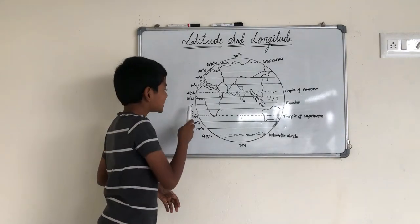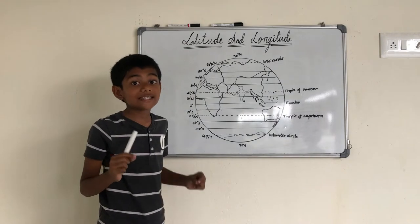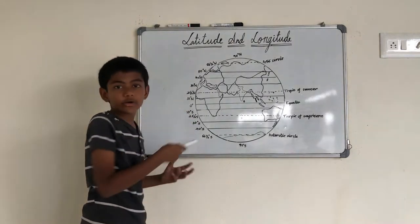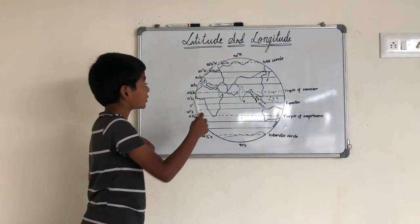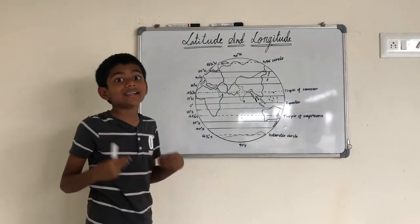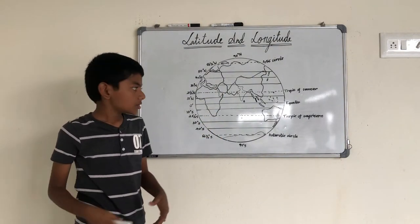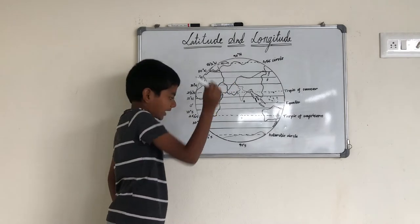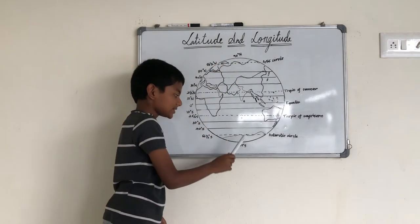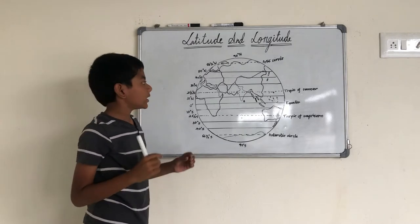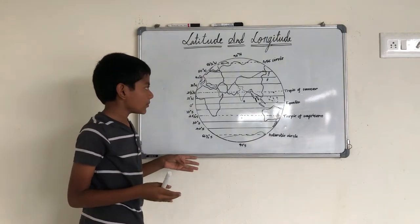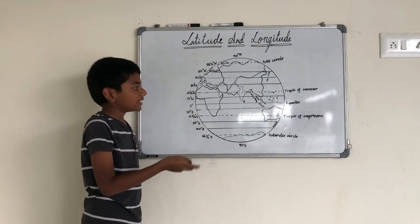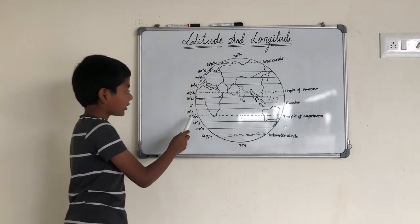The equator is marked as zero degrees because it is in the exact center of the earth, so it has no north or south value. But as you go further above or below, the degree increases. 90 degrees north and 90 degrees south are the North Pole and South Pole. The Tropic of Cancer is 23.5 degrees north and the Tropic of Capricorn is 23.5 degrees south.